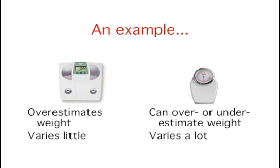But this scale consistently tells you that you're slightly heavier than you actually are. So scale 1 tends to overestimate your weight. Scale 2 is cheap and gives you very different results from weighing to weighing. But it is just as likely to underestimate as overestimate your weight.